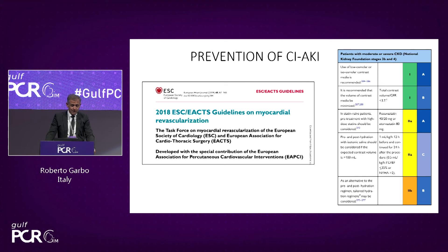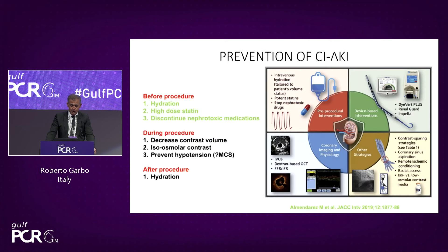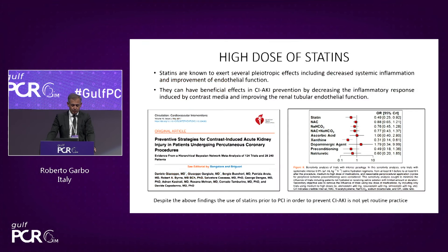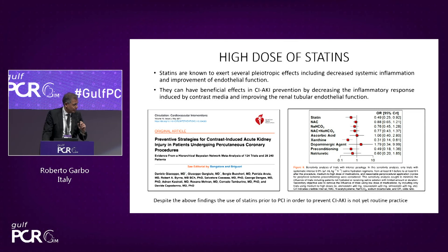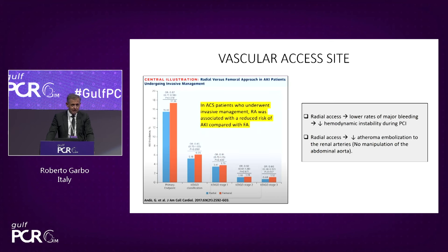For prevention of contrast-induced nephropathy, these are the 2018 European guidelines. We consider elements before, during, and after the procedure. Before the procedure, high-dose statins are important because they reduce systemic inflammation and improve endothelial function, decreasing the inflammatory response to contrast. The vascular access site also matters — radial is better than femoral because it reduces major bleeding, hemodynamic instability, and even atheroma embolization from the abdominal aorta.